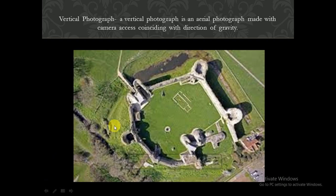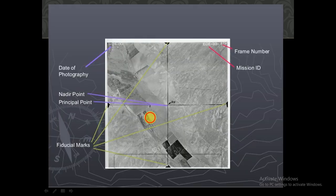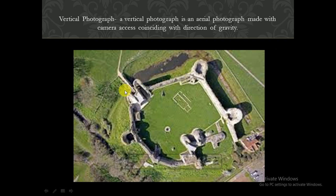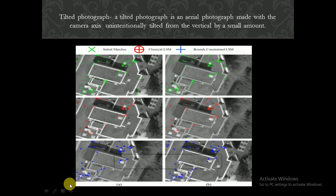In an oblique photograph you can see the image is taken neither exactly from the top nor horizontally — it is a combination of both. A tilted photograph is an aerial photograph made with the camera axis unintentionally tilted from the vertical by a small amount. You can see the building images in the tilted photograph. These are the different types of photographs used in photogrammetry.